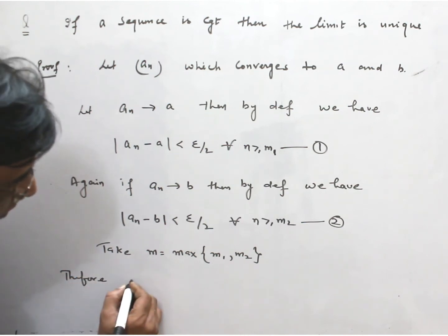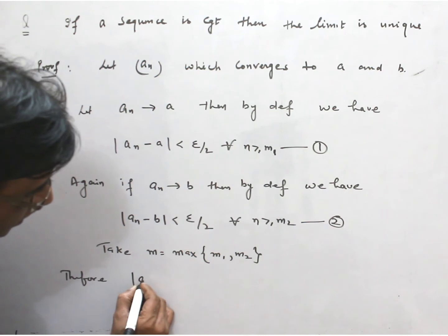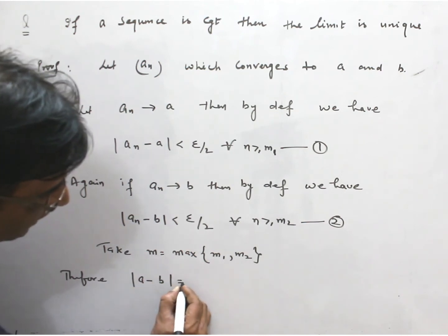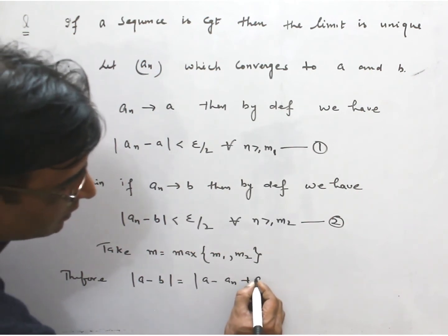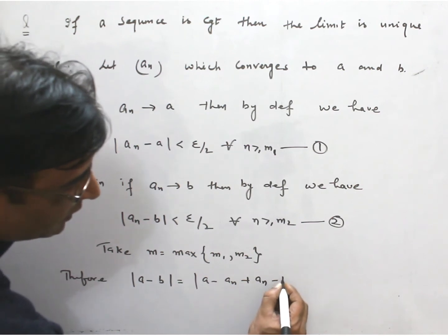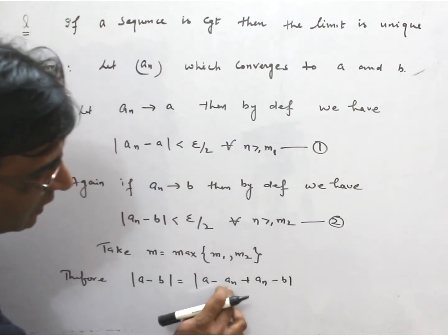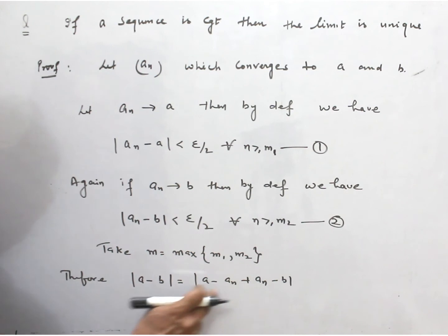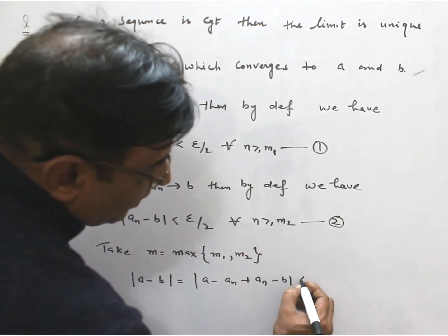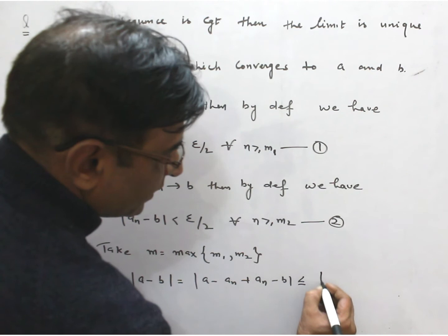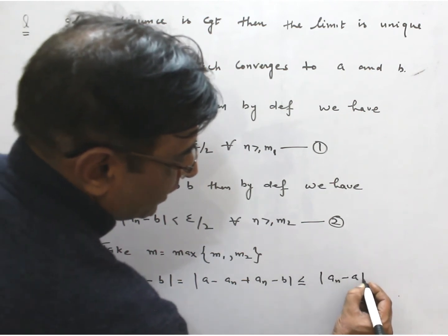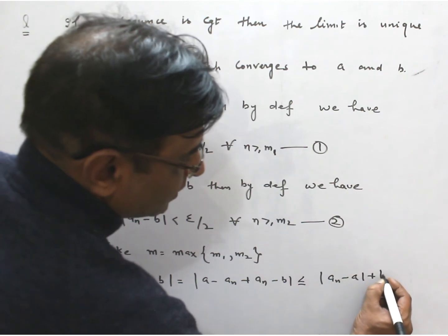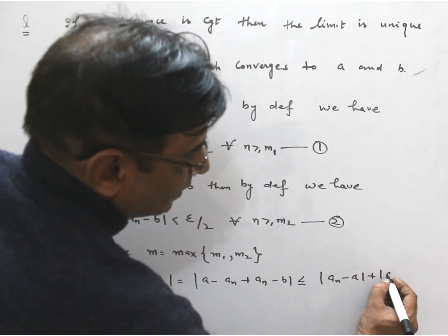Therefore |a - b| = |a - aₙ + aₙ - b|, because this aₙ will cancel with this aₙ. By triangle inequality I can write |aₙ - a| + |aₙ - b|.